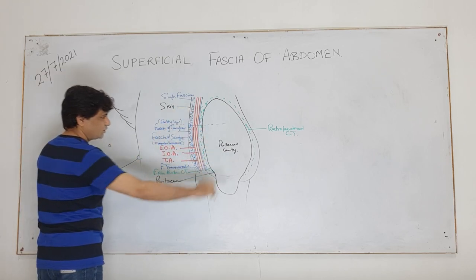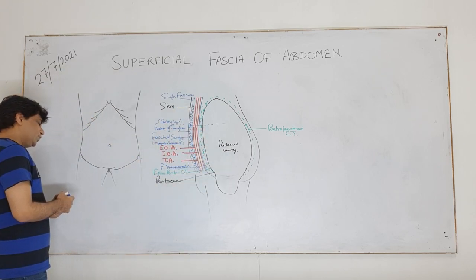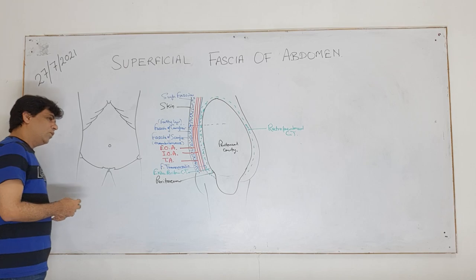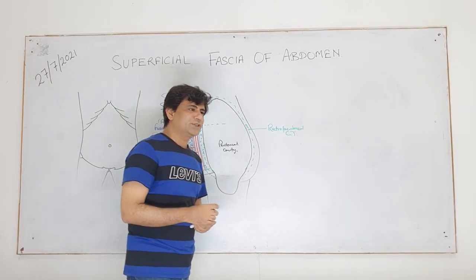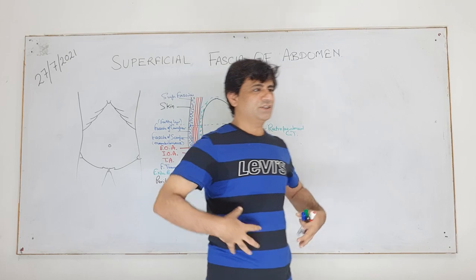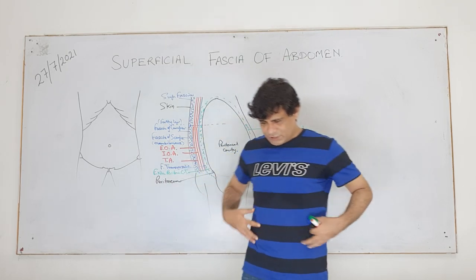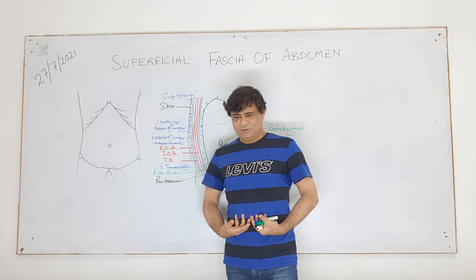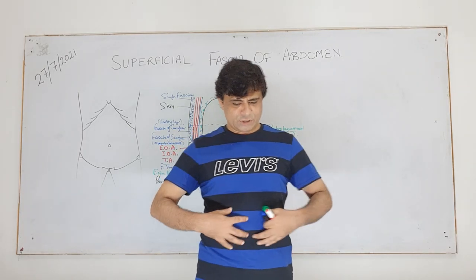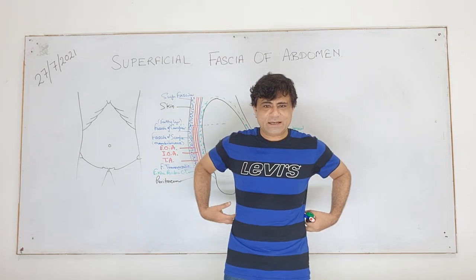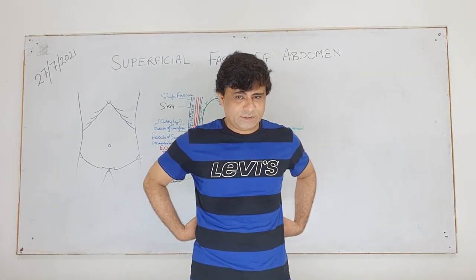Now I'll tell you about the continuation of this fascia - how it extends beyond. This modification of superficial fascia into Camper and Scarpa extends laterally, merging with the superficial fascia on the back.